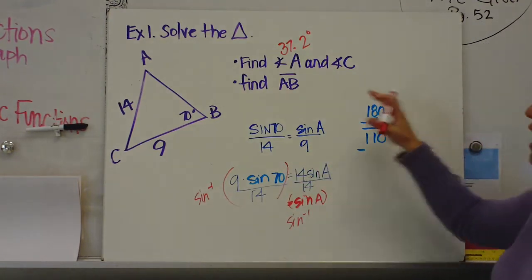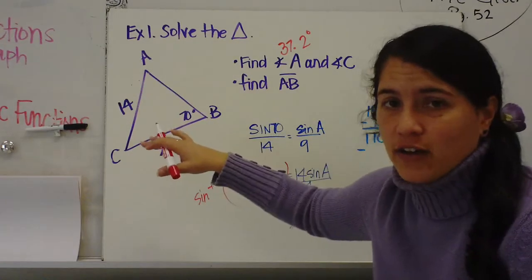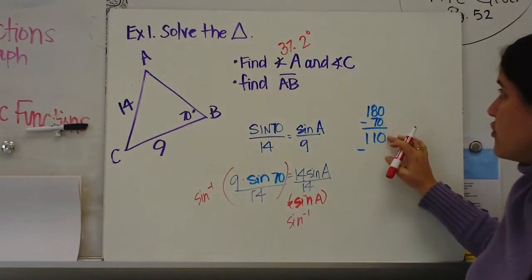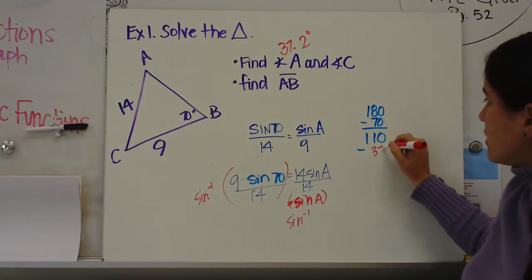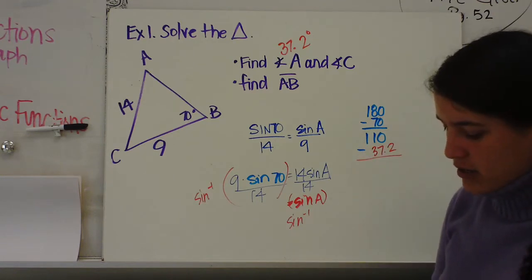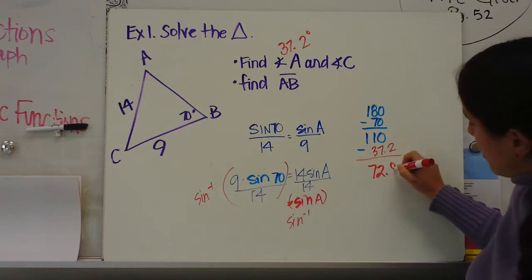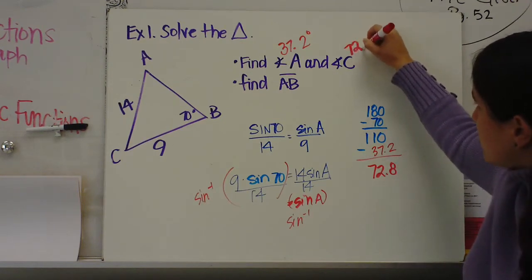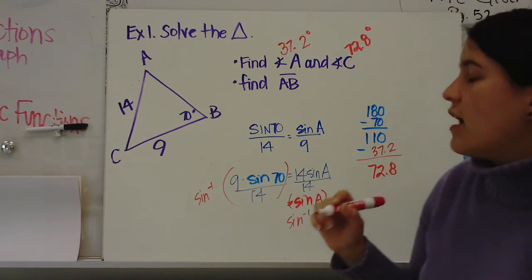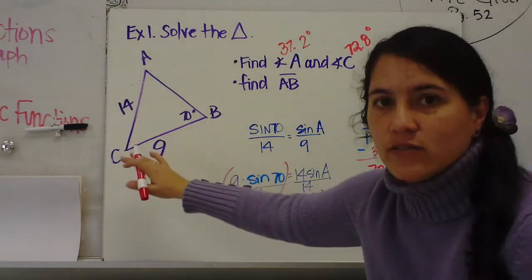Now you look over here, there's still 180 in the triangle. So I've done 180 minus 70 is 110, minus 37.2. And I see that angle C is 72.8 degrees. So now I've found angle A and angle C.